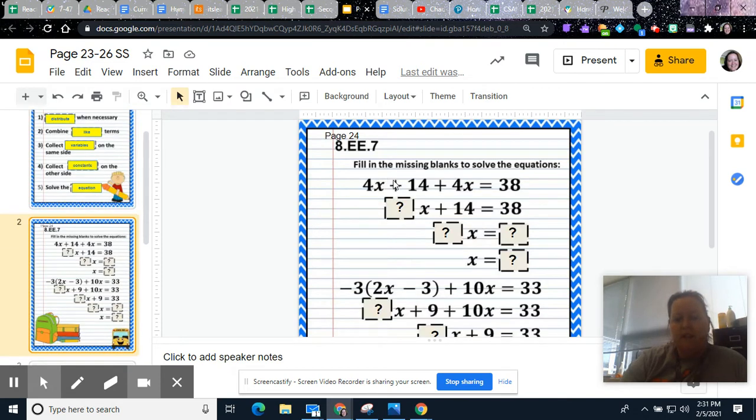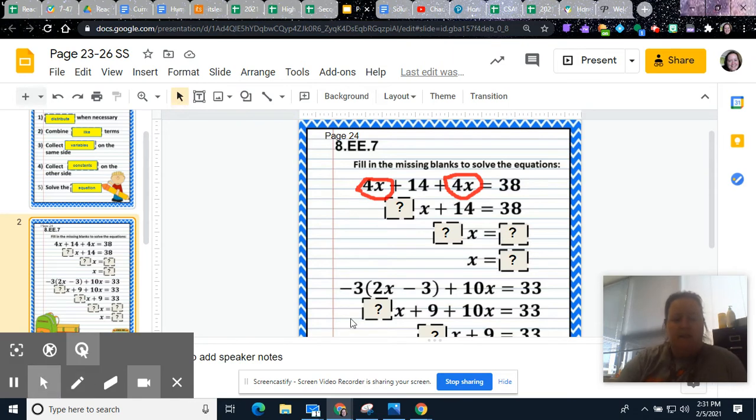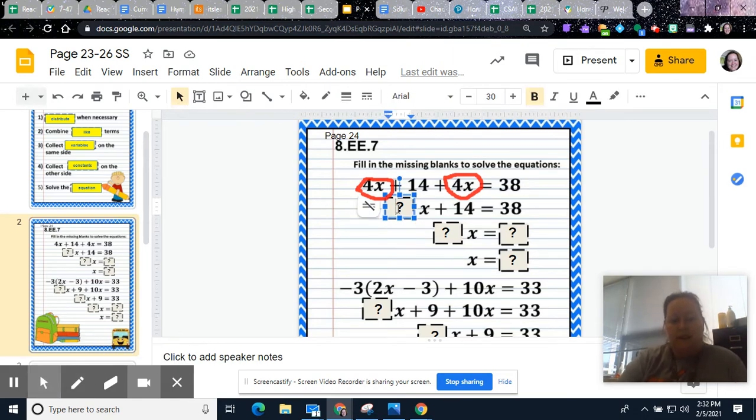So when we look down here, we look at the same side of the equation and you look for the terms that have the same variable ending. So we kind of worked on this a week or two ago. So 4x plus 4x, that's going to equal 8x. And so you have 8x plus 14 on that side. And then you'd bring down that 38.